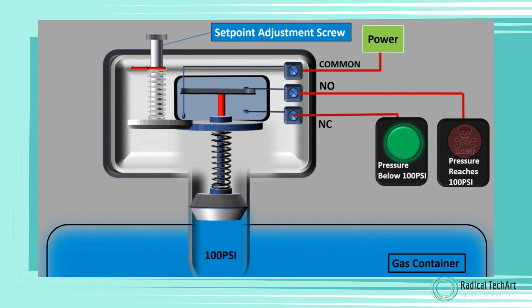So when the inlet pressure reaches 100 PSI, the piston is forced upwards by the inlet pressure, compressing the range spring, and the piston will hit the trip button on the micro switch and change it over. Now the normally open contact will get power and the red light glows while the green light switches off.